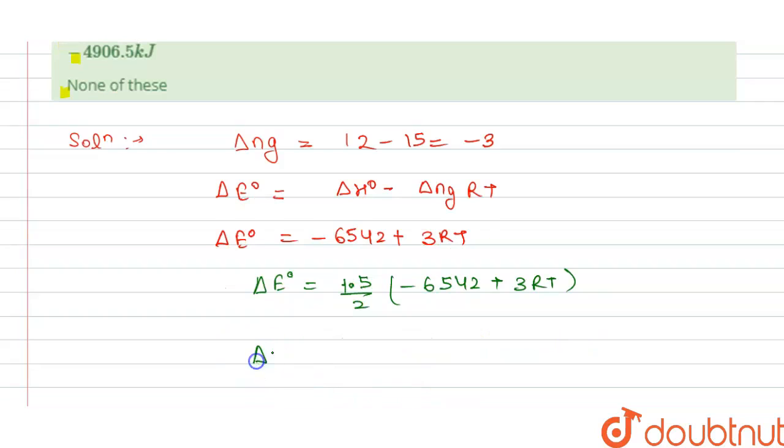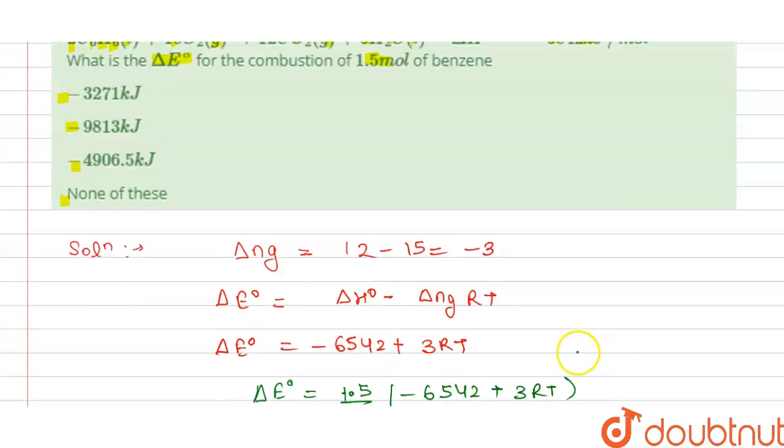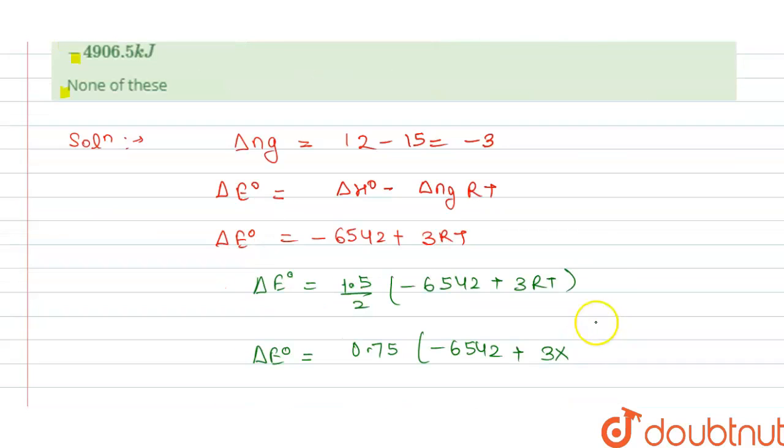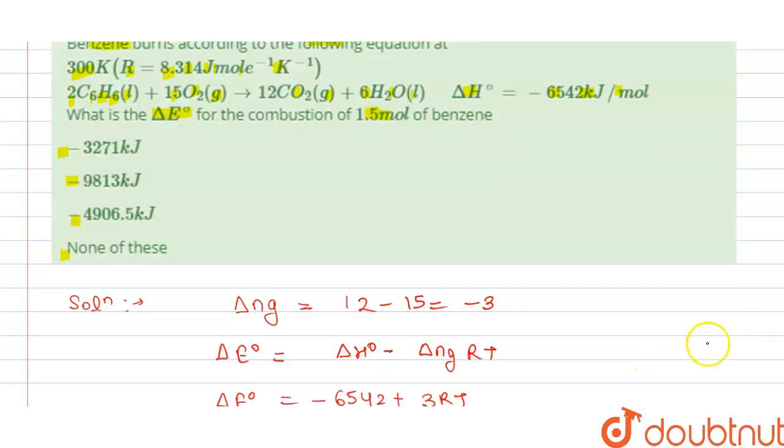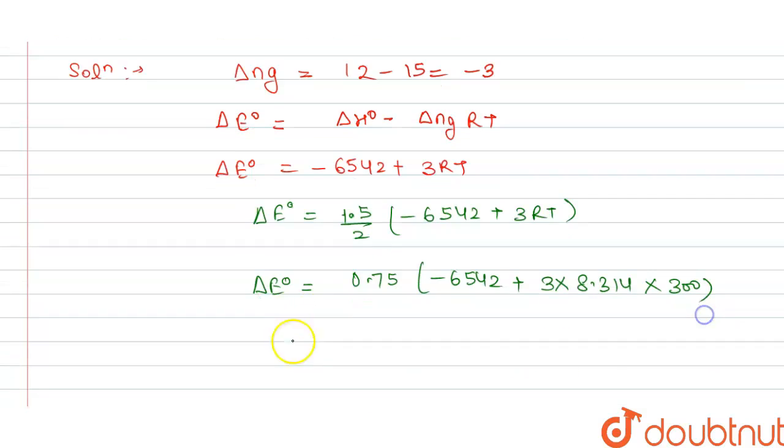So this will become 0.75 times minus 6542 plus 3 times R, which is given to us as 8.314, multiplied by T that is 300 Kelvin. By solving this we...